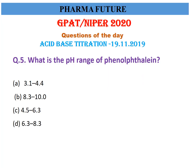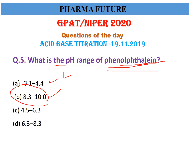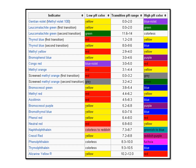Fifth question: what is the pH range of phenolphthalein in acid-base titration? Every indicator has a specific pH range, and we choose the right indicator according to that range. The right answer is 8.3 to 10 for phenolphthalein.